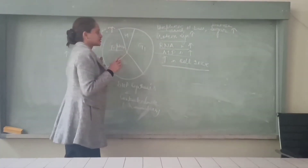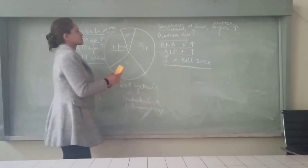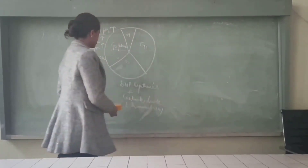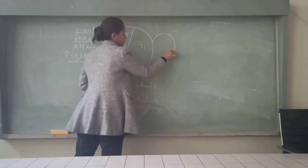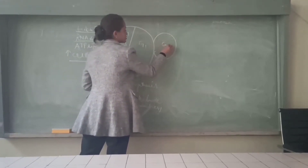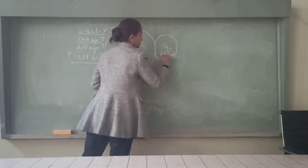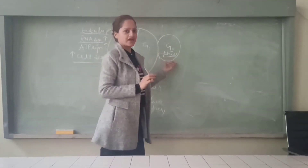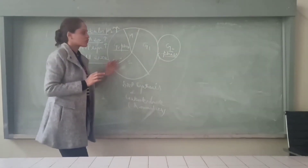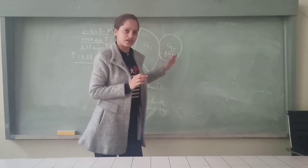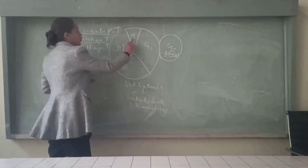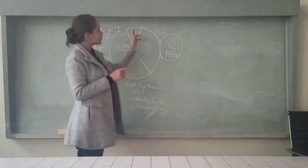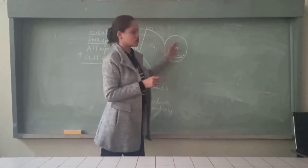There is one more phase known as G0 phase. G0 phase is also known as the quiescent phase. Here, the cell does not divide. Many cells, after cell division, get differentiated and do not divide further. So after one division, when daughter cells are produced from the parent cell, if they will not divide further, they will enter the G0 phase.